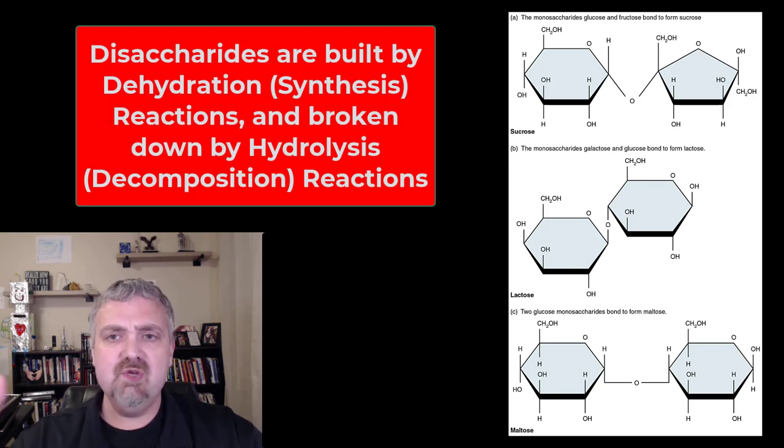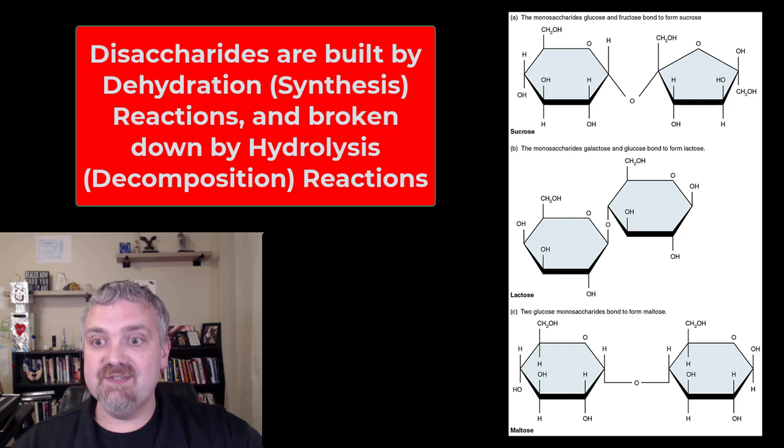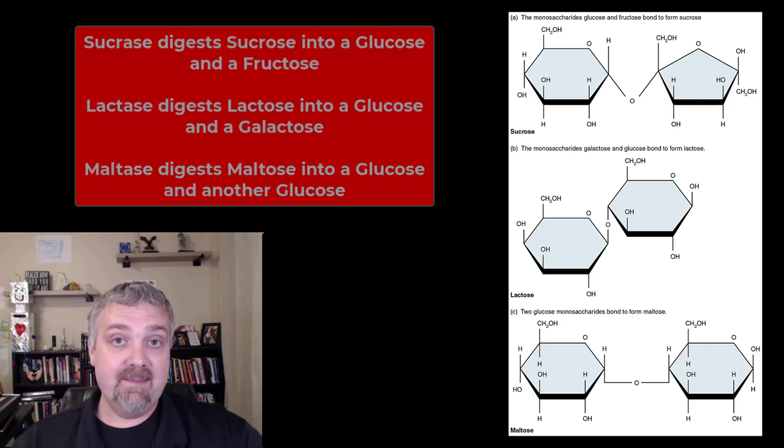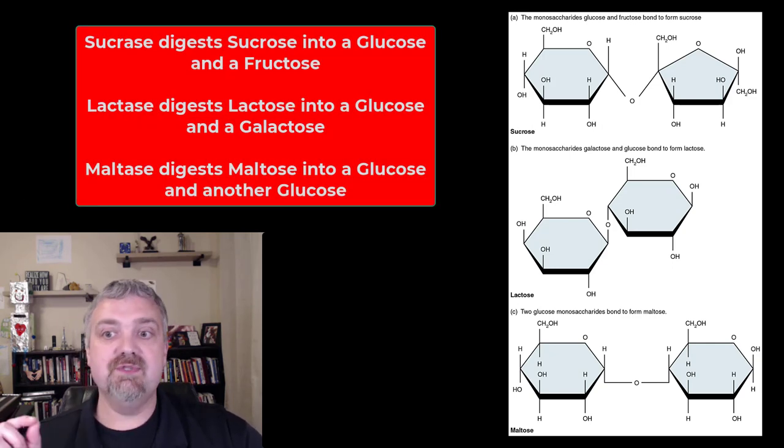If you're going to break them down, you eat these things. You've all heard of sucrose and lactose for sure. Your body has to digest them and break them down before you can absorb them and use them. It was dehydration synthesis reactions that built them. It is hydrolysis or decomposition reactions that break them down. The enzymes we would use would be sucrase to break down sucrose, lactase to break down lactose, and maltase to break down maltose.